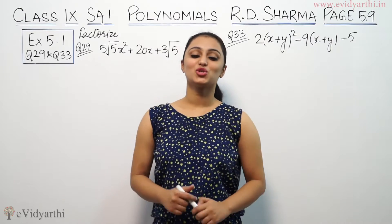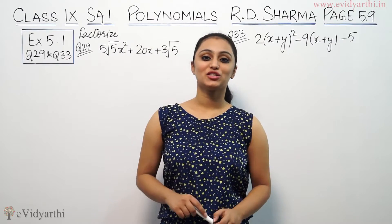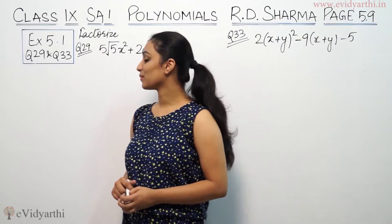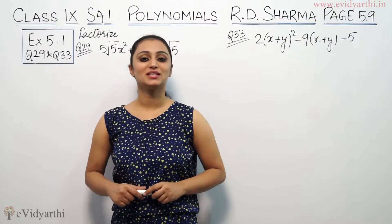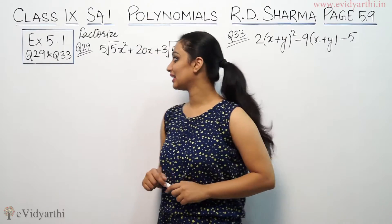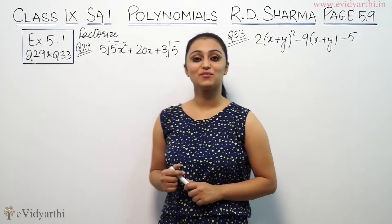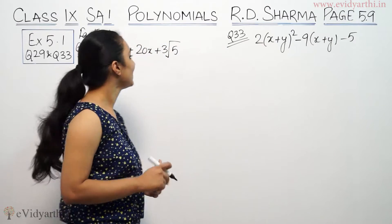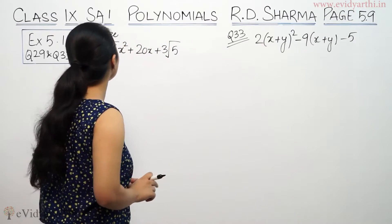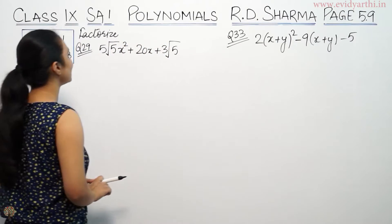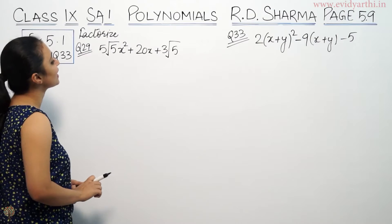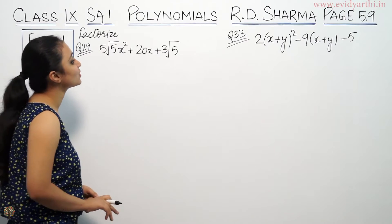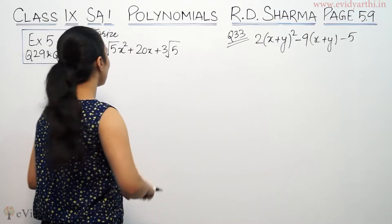Hey, what's up? This is Khushbu with another question of polynomials. This is exercise 5.1 question number 29 and 33 from page number 5.9 of Aadhi Sharma. This says factorize. Question number 29 is 5√5x² plus 20x plus 3√5.